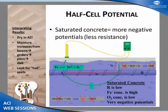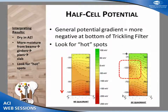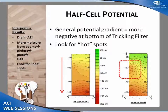One factor that influences results is whether the concrete is saturated. The more saturated the concrete, the more negative your potentials will be because ions can flow faster and create a more negative reading. For us, the structure had been out of service for about six months with the filter media removed, so the concrete was progressively drying out from top to bottom — from the beams to the girders to the piers to the slab — creating a typical gradient from less negative at the top to more negative at the bottom.